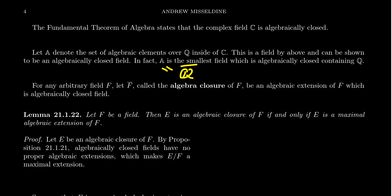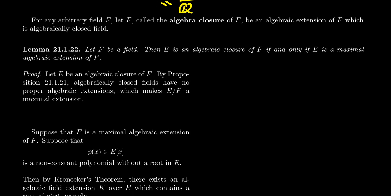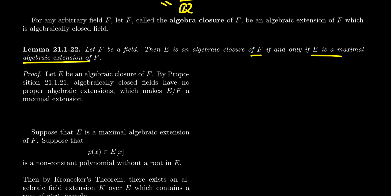Before we prove the main theorem, one thing we have to argue is: do algebraic closures even exist? That proof will utilize Zorn's lemma. But before that, I want to prove the following lemma. Let F be a field. Then E is an algebraic closure of F if and only if E is a maximal algebraic extension of F. So algebraic closures are maximal algebraic extensions.